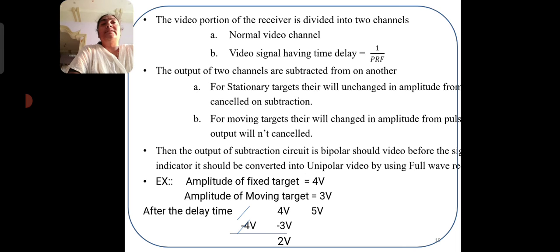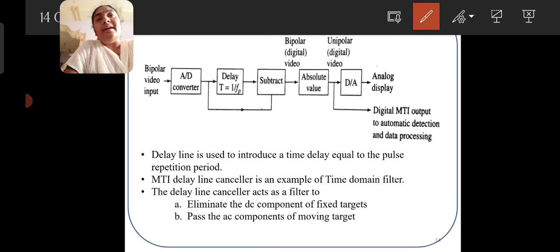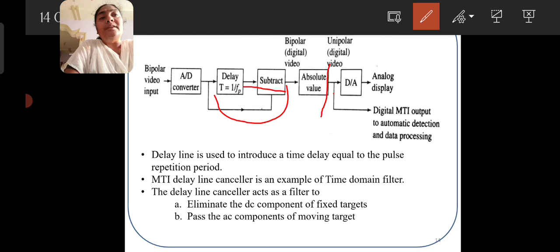The video portion of the receiver is divided into two signals: one is the normal video signal and the other is the video signal after the time delay. From the A-to-D converter, the bipolar video signal is given to the subtractor. The same signal is also produced with a delay. After subtraction, we get the bipolar digital video signal, which is then passed to the absolute value block, converting the bipolar signal to a unipolar signal.